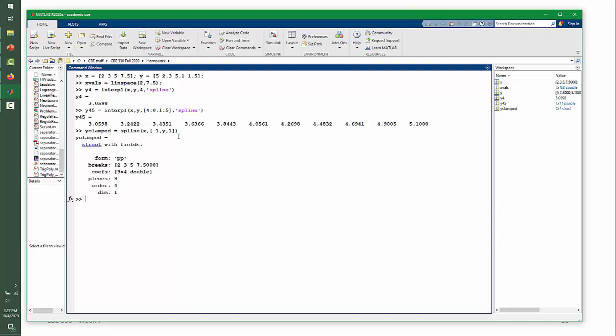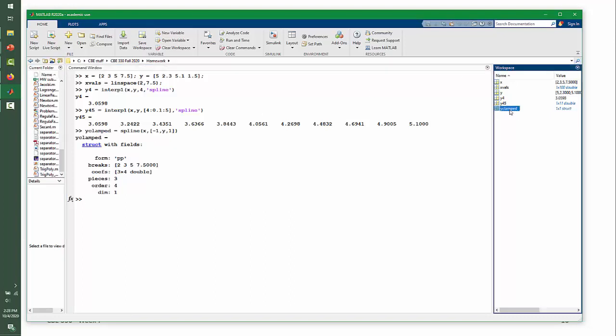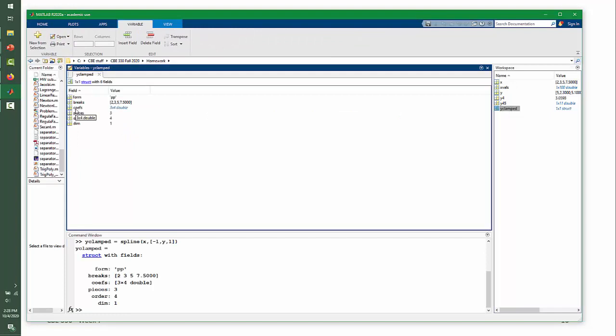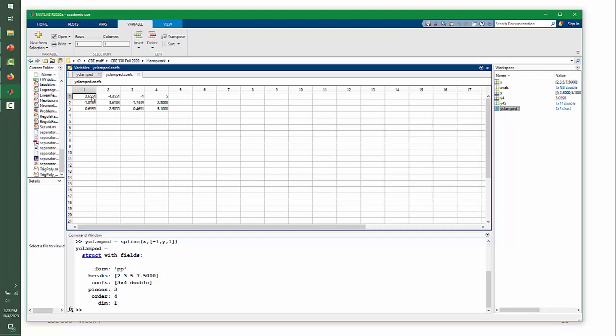This creates a structure containing a piecewise polynomial that we called y-clamped. The COEFS matrix, which resides inside the y-clamped structure, contains the four coefficients of the cubic polynomial for the first spline segment, the second spline segment, and the third spline segment.